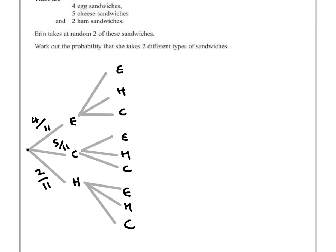So why did we do this as a tree diagram? Well, it allows us to organise the probabilities. If she's already taken one egg sandwich, the chance of choosing egg for the second sandwich would be three out of ten — there are only ten sandwiches left. For ham, that would be two out of ten, and for cheese, five out of ten.